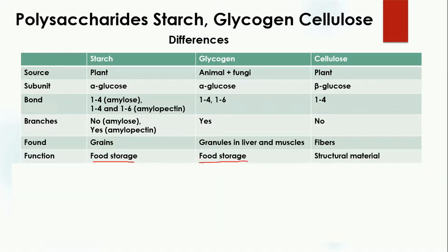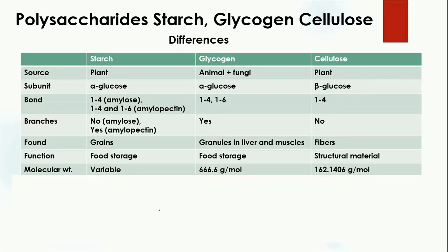The function of starch is to store food and glucose. Glycogen also stores food — glucose is stored in animals in the form of glycogen, and in plants in the form of starch. Cellulose forms structural material, making up the cell wall, which protects the cell.